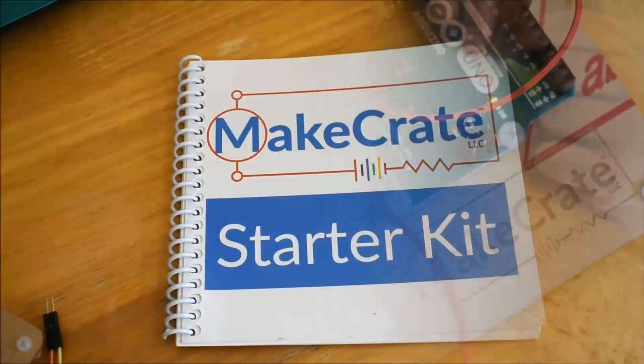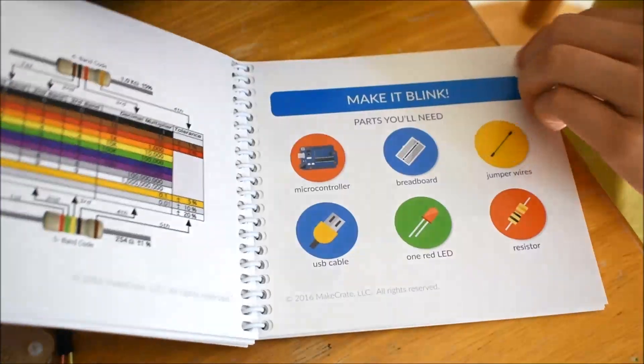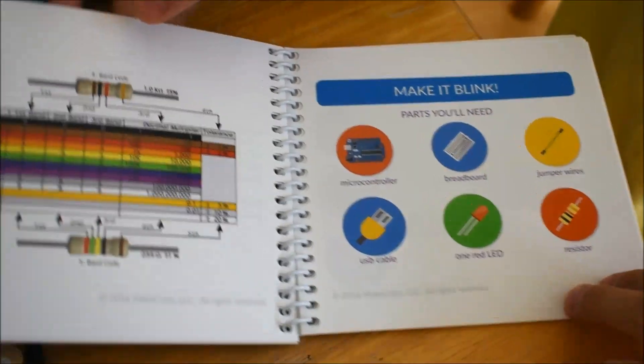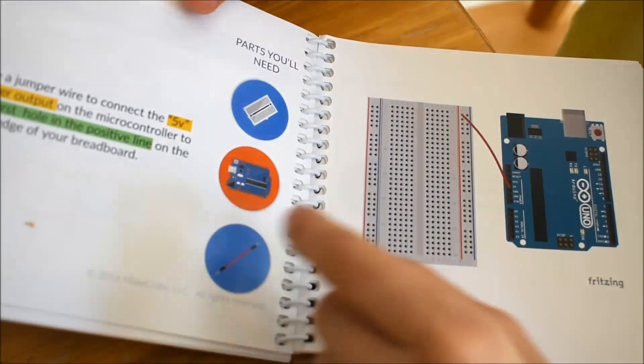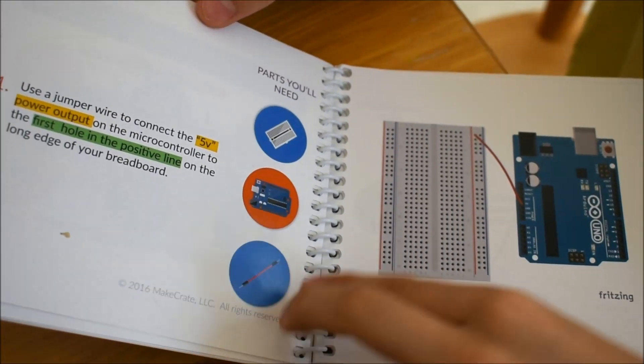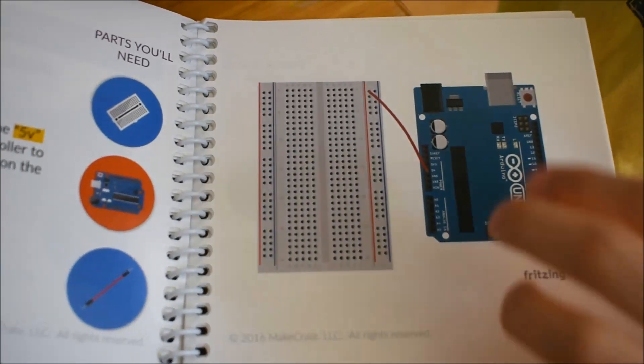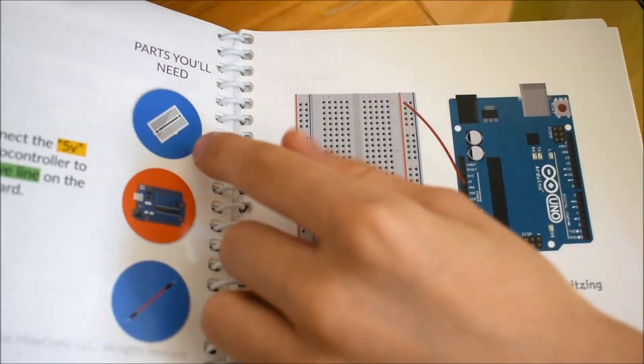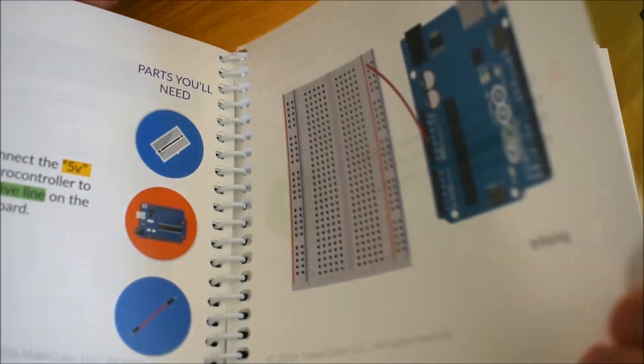So in this make crate it includes very detailed instructions. It will tell you the parts you need for the circuit. And in the instructions it tells you exactly where to place the wires and the components. It even tells you the parts you'll need for each page.